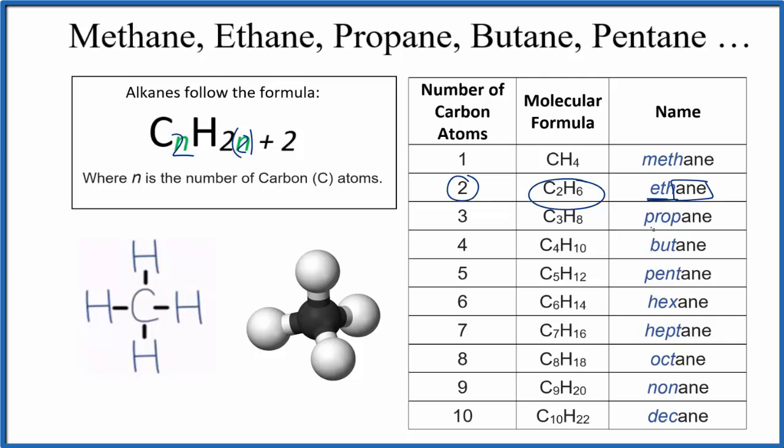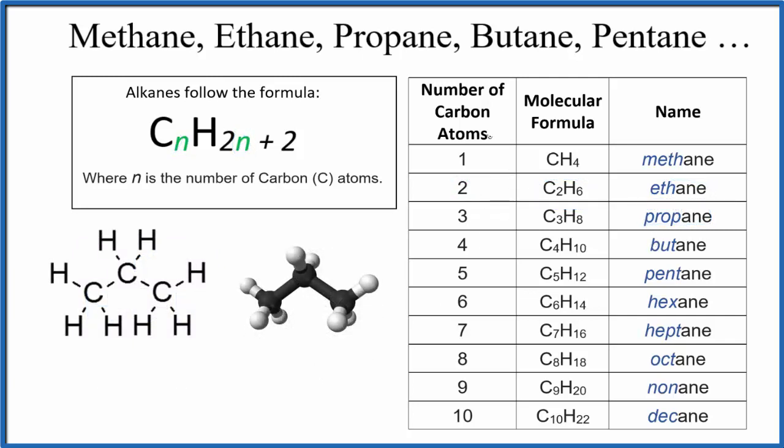Let's take a closer look at propane. Begins with pro, ends with A-N-E. So for propane, we have three carbons. So we get C₃H₈. Here's our three carbons.